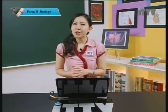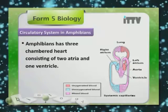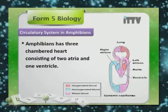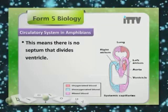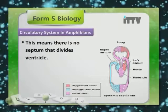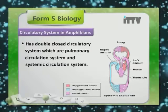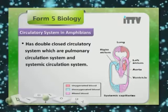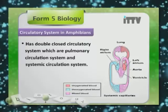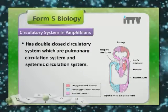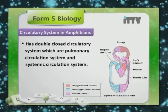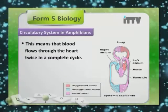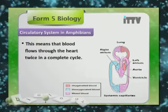Amphibians have three-chambered hearts consisting of two atria and one ventricle, meaning there is no septum dividing the ventricle. Unlike fish, amphibians have a double closed circulatory system, which is the pulmonary circulation system and the systemic circulation system. This means that blood flows through the heart twice in a complete cycle.